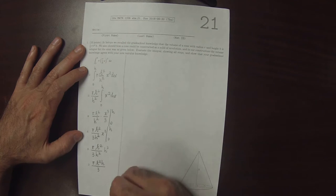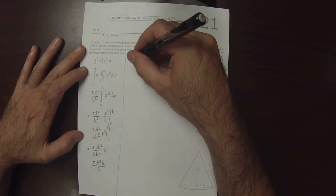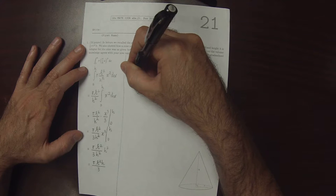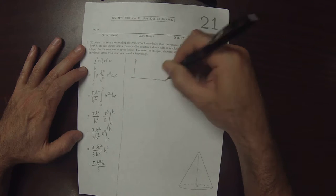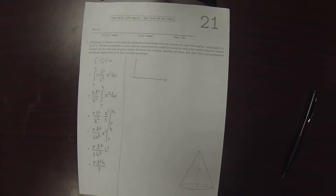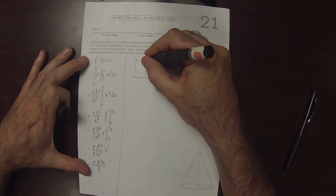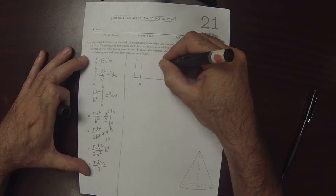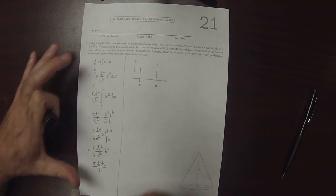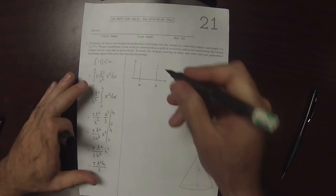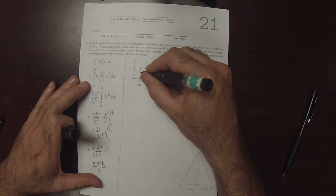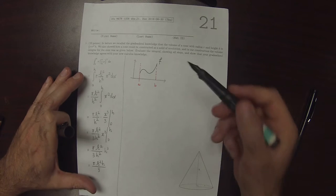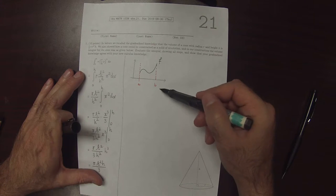from class we described if we have a function defined from a to b, so some function f, then we can revolve f about this axis.